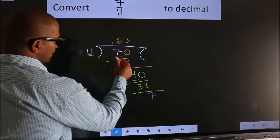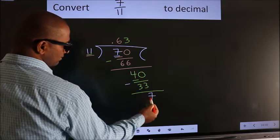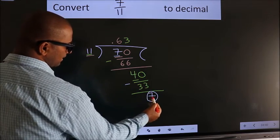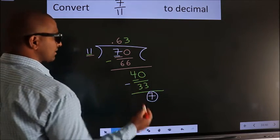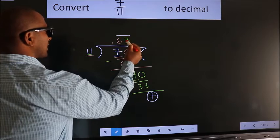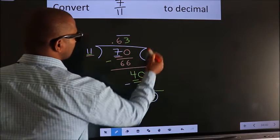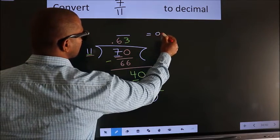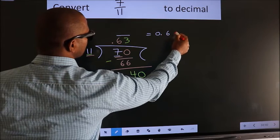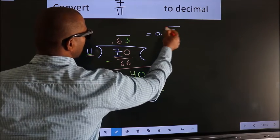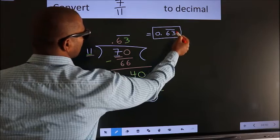Remember, earlier we had 7. We got 7 again. That means we get bar on these two numbers. Therefore, our answer is 0.63 bar on these two numbers. This is our answer.